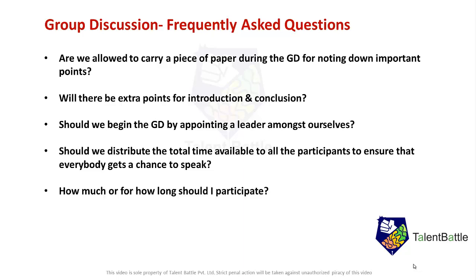How much or for how long should I participate? Considering a 10-minute GD with 8 to 10 participants, I recommend you try to participate at least three to four times, with each contribution lasting at least 25 to 30 seconds. However, in campus placement GDs, everyone will be trying to speak since it is a matter of 3 to 10 lakhs depending on the company. You may get a chance only once or twice, so in that case describe your point for at least 50 to 60 seconds. Ideally, three to four times at least 30 seconds each.